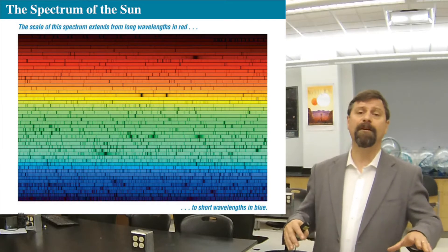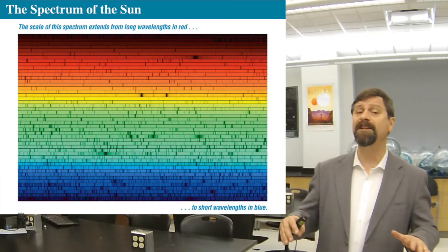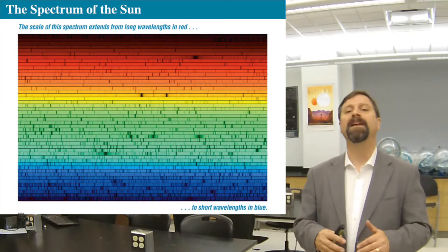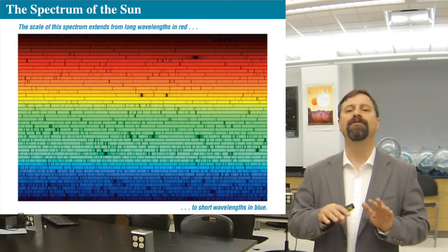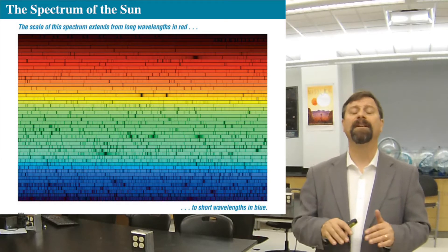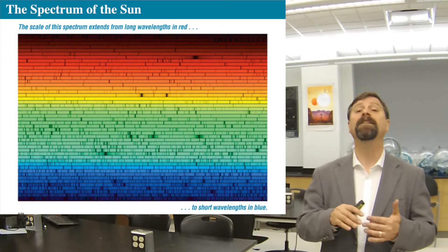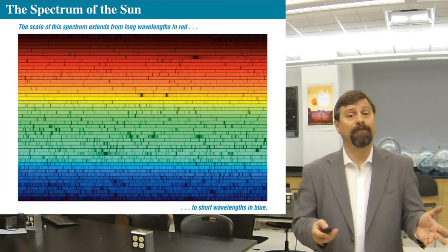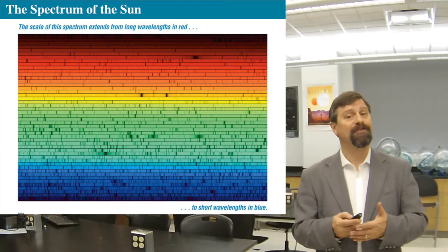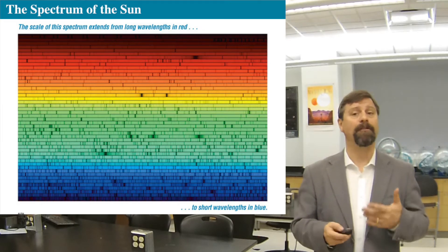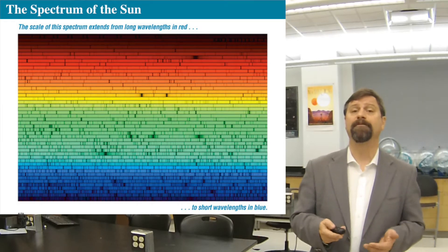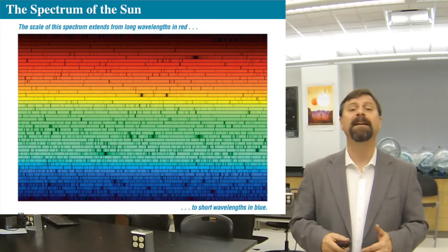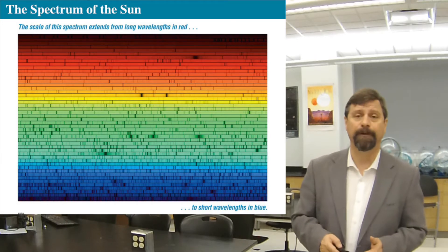The rainbow itself we call the continuum or the continuous spectrum, and there are absorption features which are darker than the surrounding continuum. The sun's spectrum is what we call an absorption spectrum — there is light that has been absorbed from the continuum.